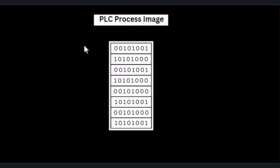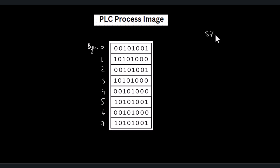Here is a sketch of the PLC memory. The data is represented in the form of bytes starting from byte number zero, one, two, three, four, five, six, and seven — a total of eight bytes. This is just an example to help understand the concept. Suppose we have the PLC S7-1200 that has this memory layout.